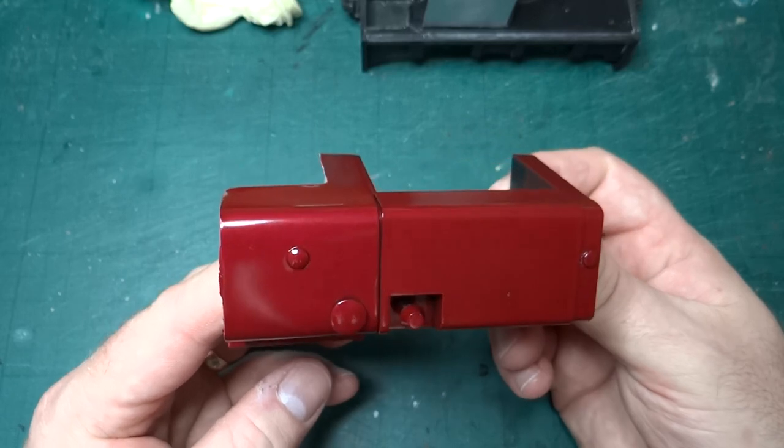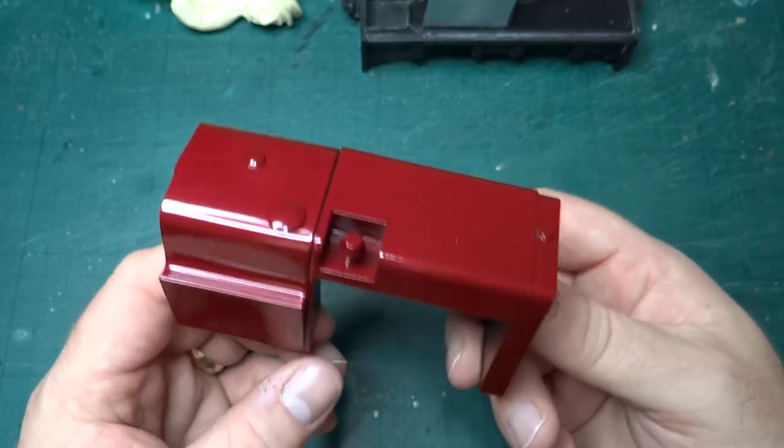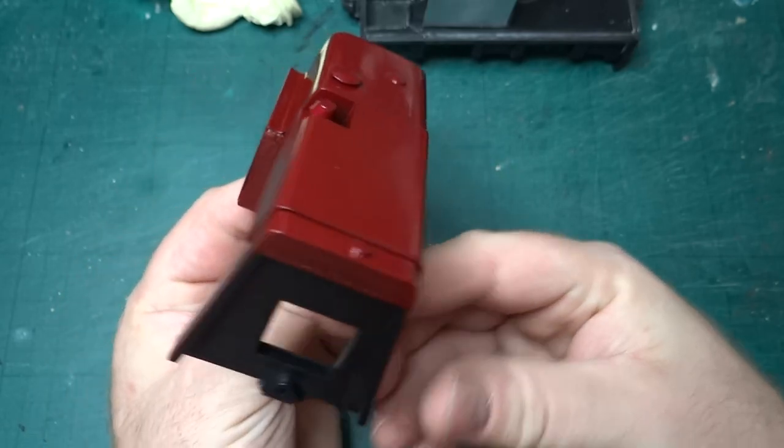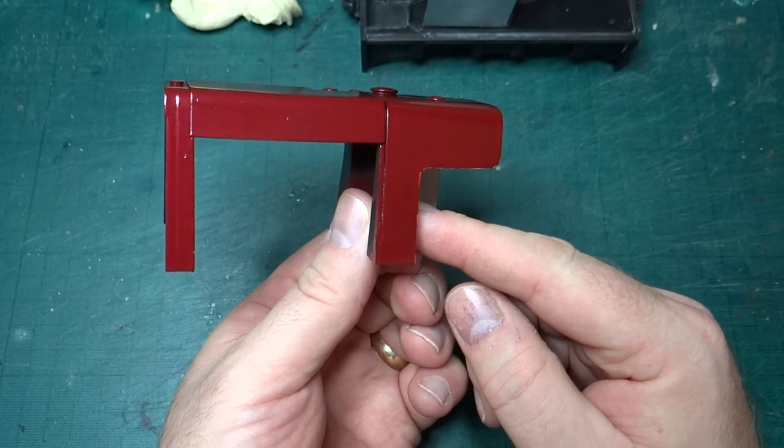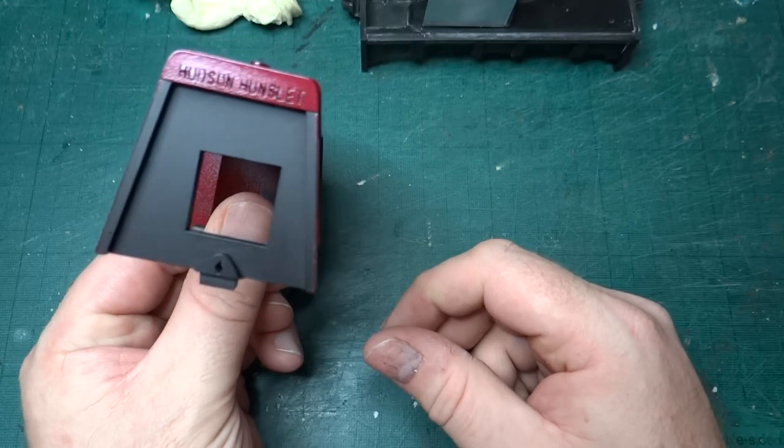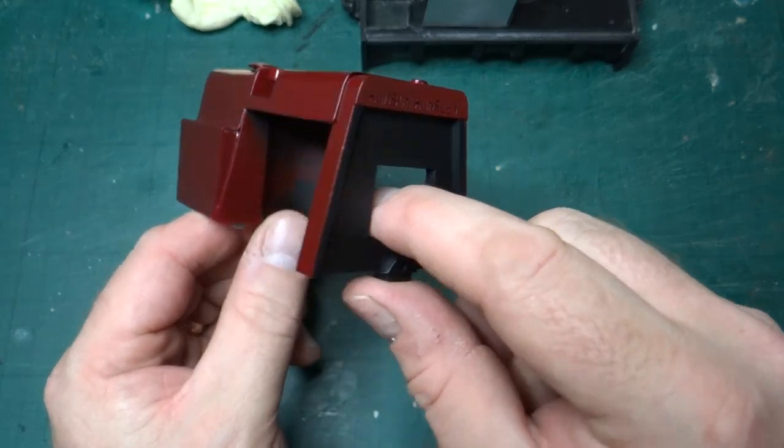We'll have to see what that works, how that works out when I varnish it. It'll be either a satin varnish or a complete matte dull coat is what I usually use before weathering, so I'll have to see how that comes out. But for now I think that's worked pretty well. I've kept this nice and black so it's black behind the grill.